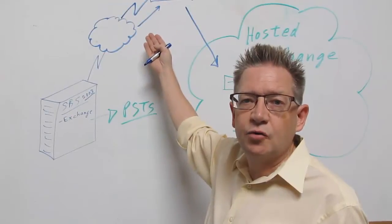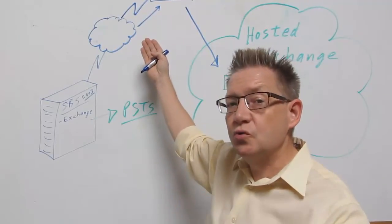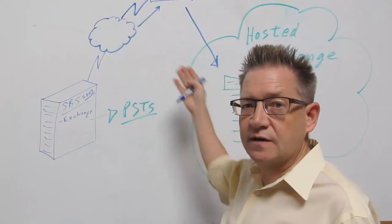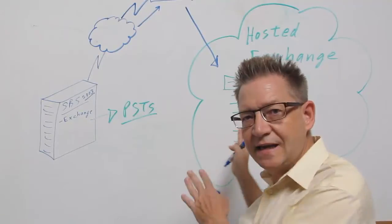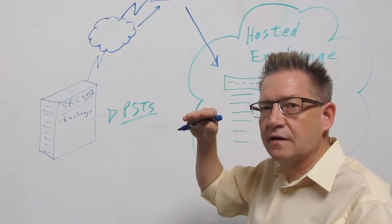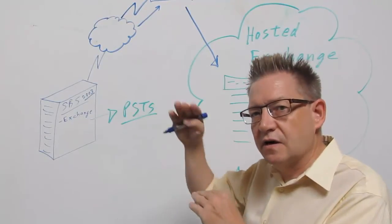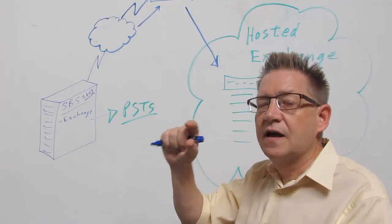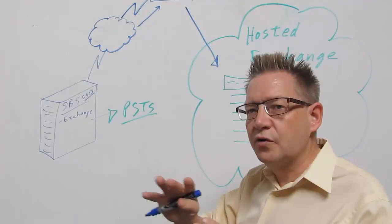The next step is that you go to the spam filter and say: I don't want my email to go into the old Exchange server anymore, I want it to go now to the hosted Exchange server. So now incoming email is going to go to this mailbox. What's in the hosted Exchange mailboxes is all the email and data until last Thursday, and everything starting from today. What's missing is just this little notch of stuff that went into the old Exchange server before you made the cutover.